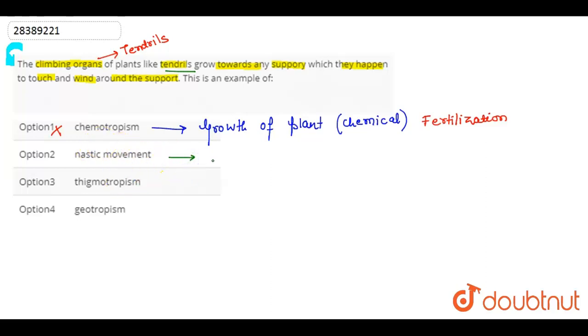If we take an example of Nastic movements like Thigmonasty, then Thigmonasty is concerned with sensitive plants. What happens when we touch it? The leaves fold.